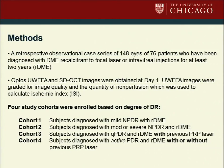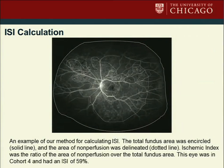We broke these patients into four different groups. Cohort 1 had subjects diagnosed with mild NPDR with recalcitrant diabetic macular edema. Group 2 had moderate or severe NPDR with recalcitrant DME. Group 3 had subjects with quiescent proliferative diabetic retinopathy with or without previous panretinal photocoagulation. Cohort 4 had active proliferative diabetic retinopathy with or without previous laser. This patient demonstrates an ischemic index of 59% when we demarcate the area of perfusion and the total area of the image.